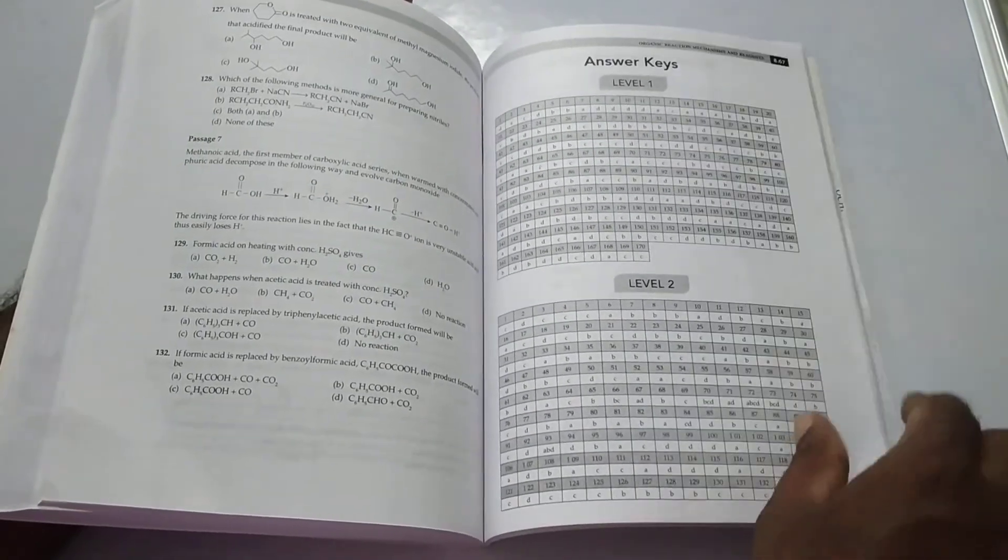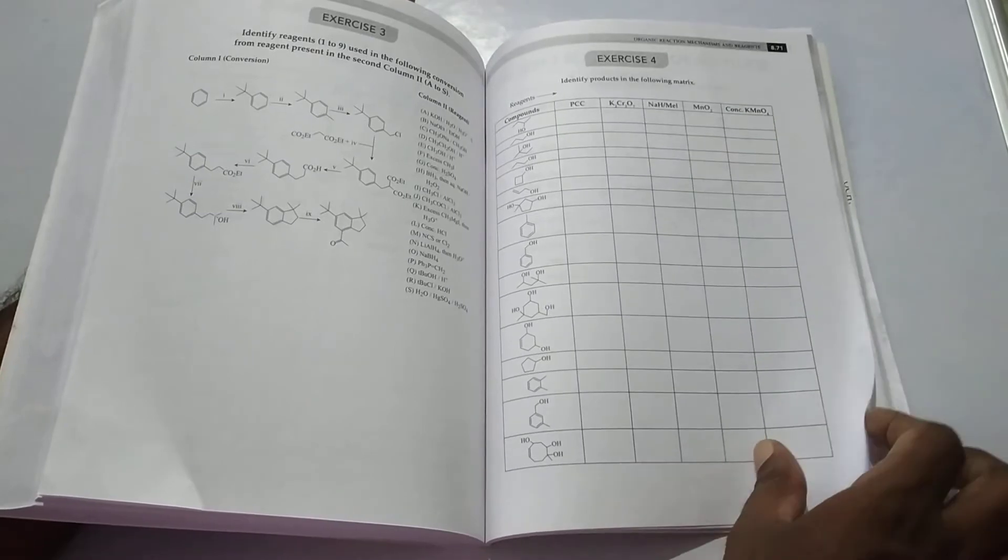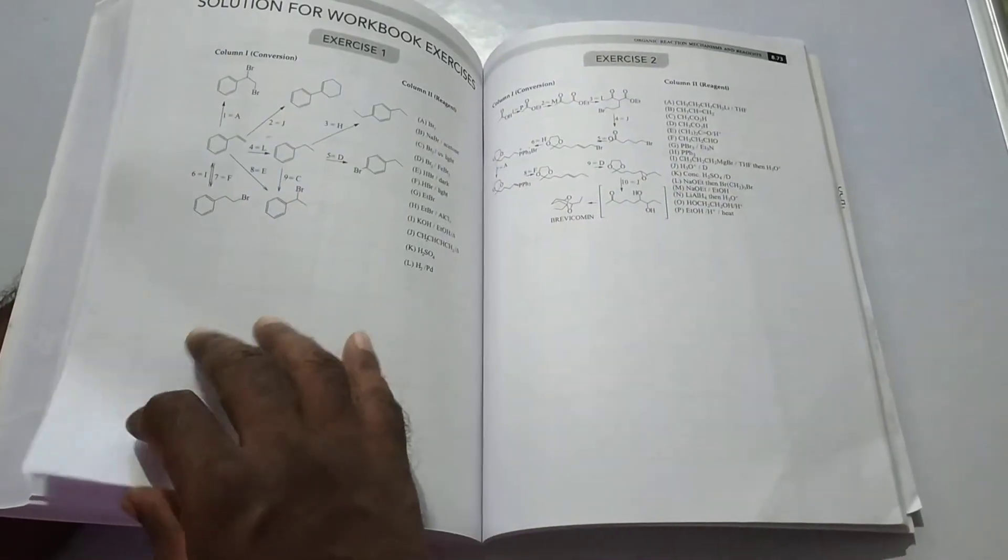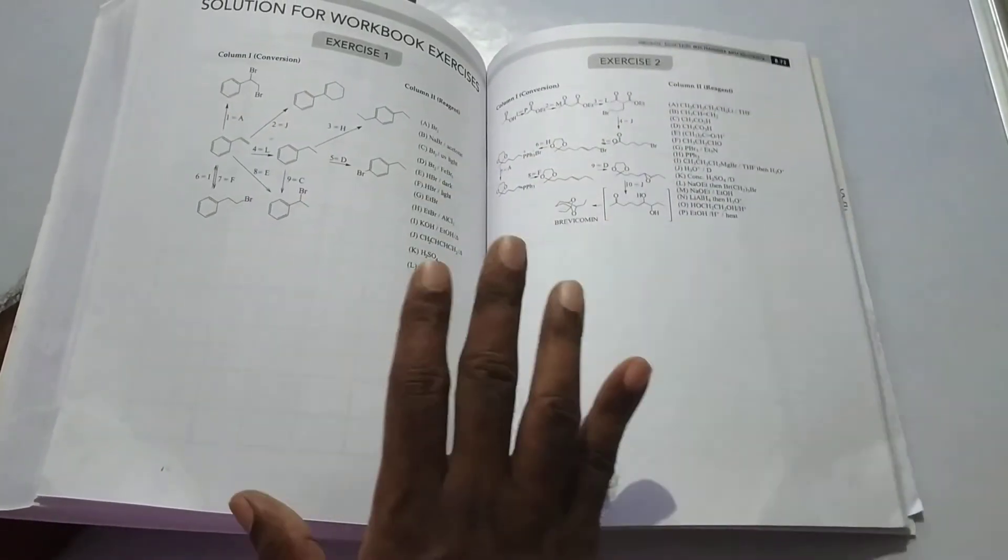Also in this chapter, the workbook is also given. Exercise 1, Exercise 2, and Exercise 3, and Exercise 4. Also answer is given. That is one of the very good for problem solving in organic chemistry. Then at the end of the book, the conversion chart is given. That is very useful for the students.